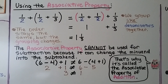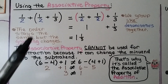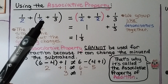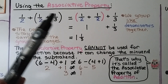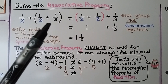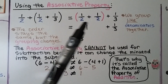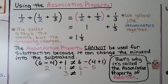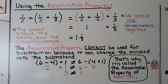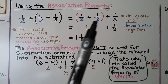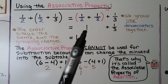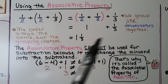Using the associative property — if we had the 1 half plus 1 third in parentheses, we would move the grouping around the 1 half plus 1 half. We group the like denominators together. The order stays the same, but the grouping changes. So we have 1 half plus 1 half, which is 1 whole, then we add the 1 third, giving us 1 and 1 third.